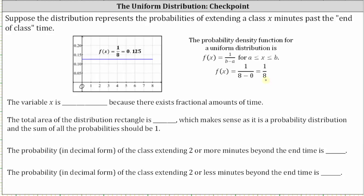Because the random variable x can take on all of the times from zero minutes to eight minutes, including all the decimal or fractional parts, the random variable x is a continuous variable, not a discrete variable. We can say x is continuous because there exists fractional amounts of time — or an infinite number of decimal amounts of time — from zero minutes to eight minutes.